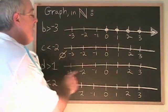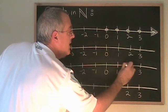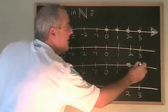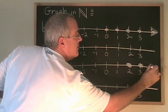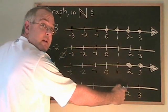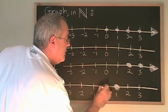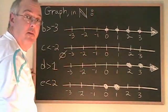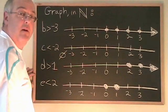d greater than 1 — the natural numbers that are greater than 1 start with 2. 1 is not greater than itself, so it is not part of the answer. 2 is greater than 1, 3 is greater than 1, and on and on forever in the positive direction. e less than 2 — 1 is less than 2, so it's part of the answer. 0 is less than 2, it's part of the answer. The negative numbers are not natural, so they're not part of the answer. And 2 itself is not less than 2, so it is also not part of the answer.